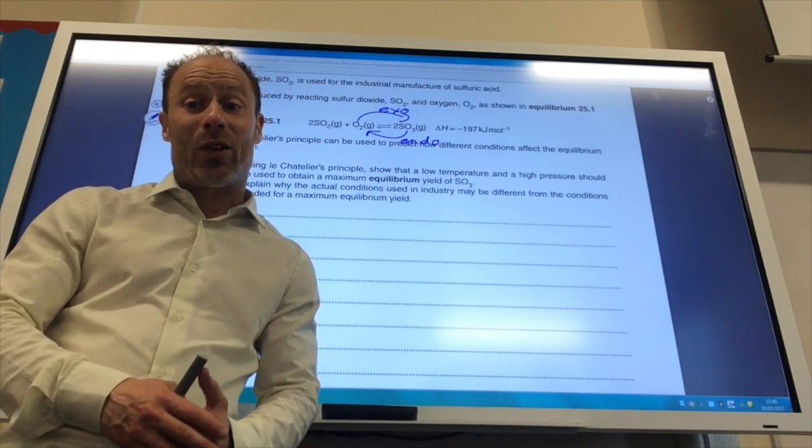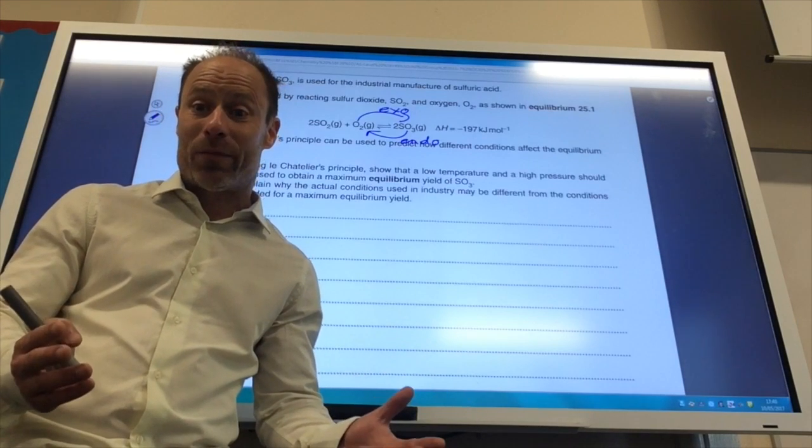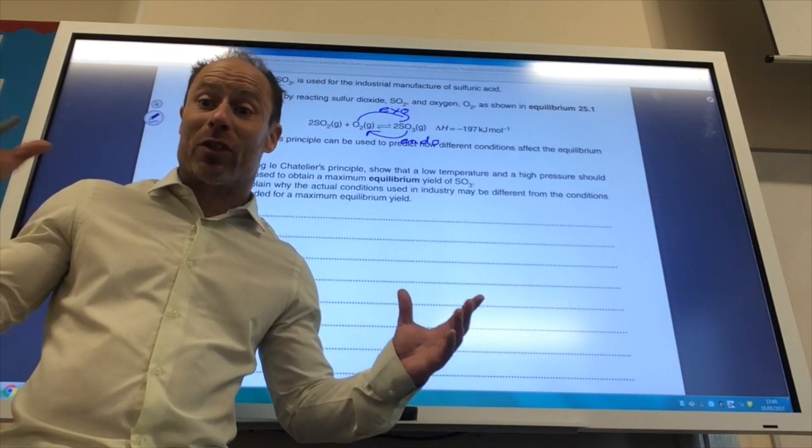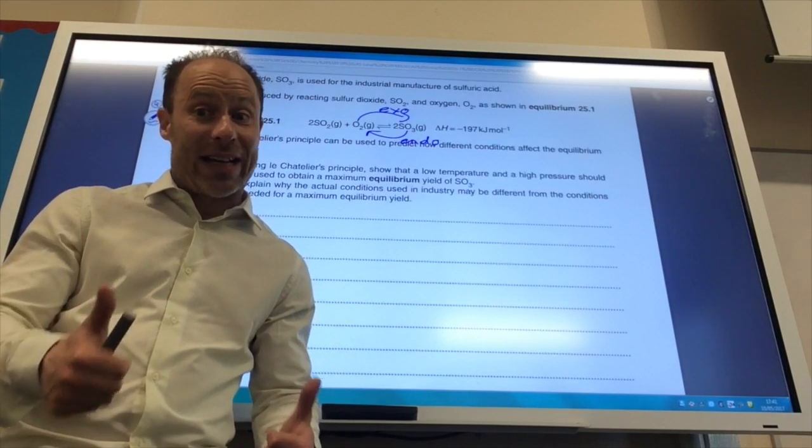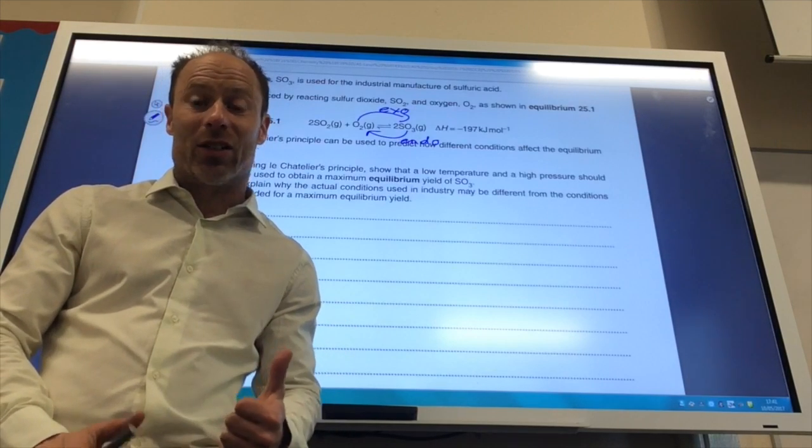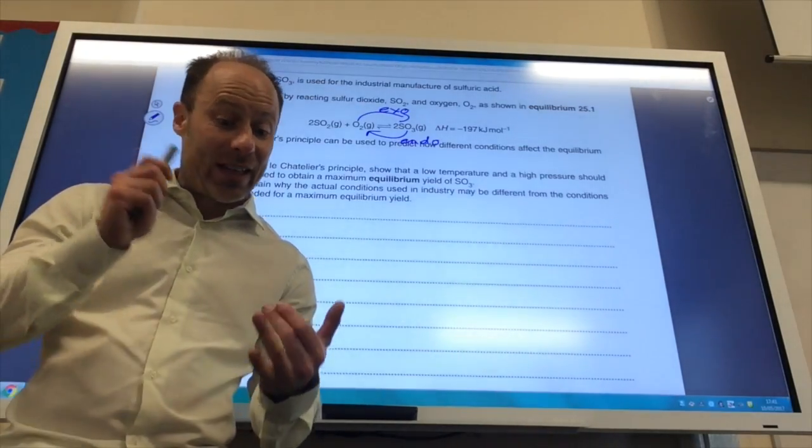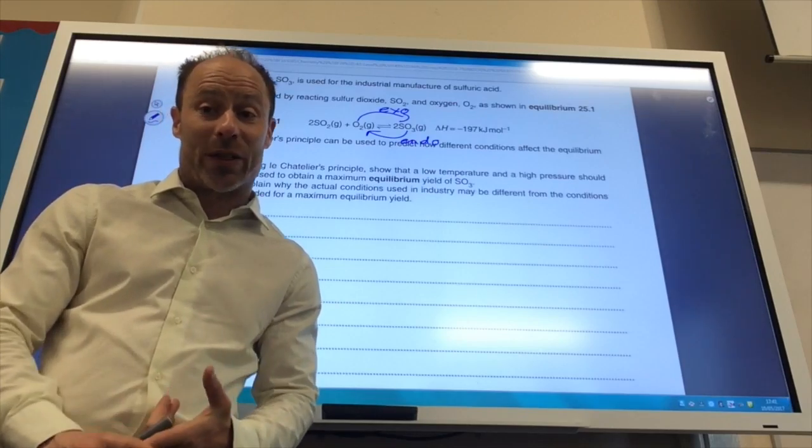The other thing is why may I not want to use a high pressure is because it's expensive to maintain a high pressure and also for safety reasons as well. So for those two reasons, that may be why I don't want to have a high pressure. In terms of rate, high pressure is great because rate increases with pressure. So high pressure is great for rate, great for equilibrium, but not so good in terms of cost and also in terms of safety.